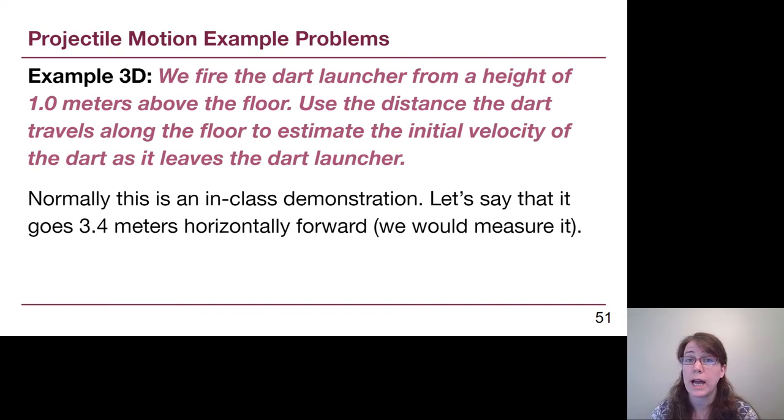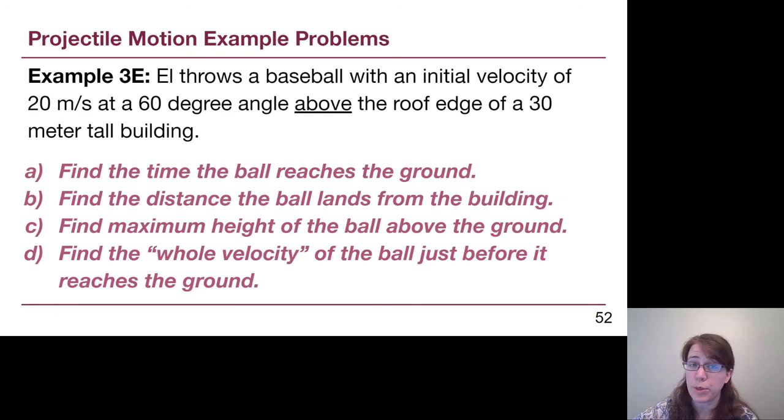This example is one of my favorites to do in class because we actually have this dart launcher. It's a fly swatter, but it launches like this little webbed thing. Normally this is an in-class demonstration where we physically shoot the dart or bug launcher fly swatter thing and see how far it goes from the starting point horizontally to figure out how fast that thing is actually launching. For this example, in order for us to have our own separate example video, let's say that it goes 3.4 meters and we'll use that in our problem solving.